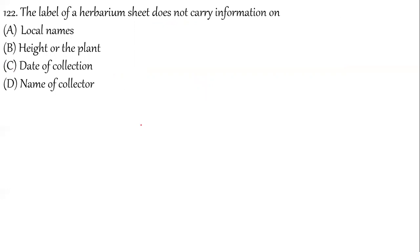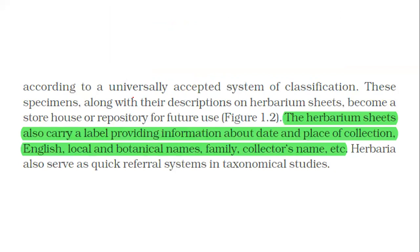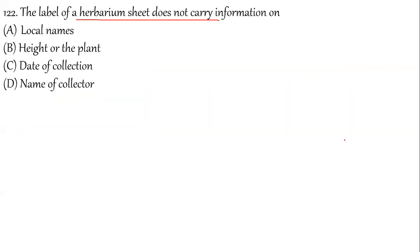Question 122: The label of a herbarium sheet does not carry information on which of the following? A herbarium sheet contains: date and place of collection, English name, local name, botanical name, family, and collector's name. It does not contain any detail about the height of the plant. So option B is correct for question 122.